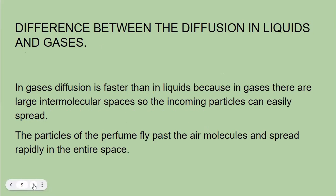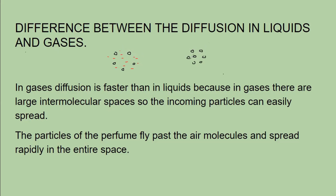What is the difference between diffusion in liquids and in gases? In liquids, diffusion takes place slowly; in gases it takes place faster. The reason is that in gases there are large intermolecular spaces, so when you spray an air freshener the particles can quickly fly in between these intermolecular spaces. In liquids, the particles have only little gaps between them, so incoming particles have a little difficulty moving through the crowd — that is why diffusion in liquids is slow and in gases it is faster.